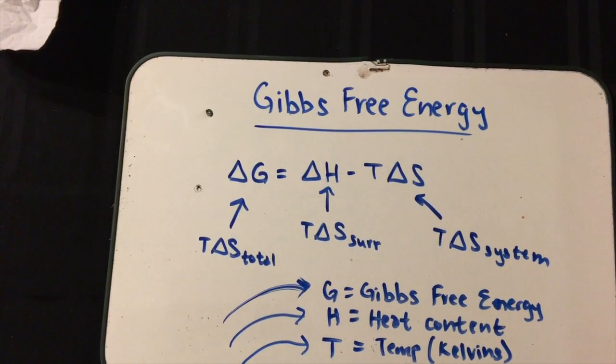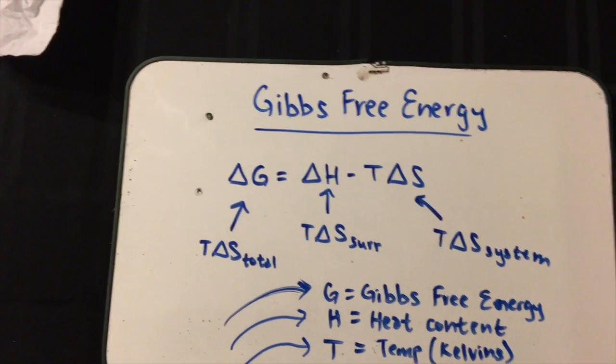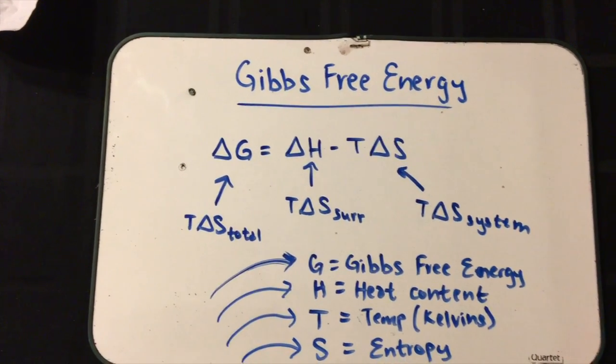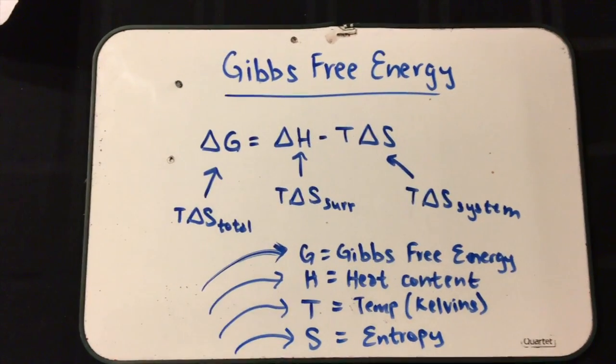G actually stands for Gibbs free energy, H is the heat content, T is the temperature in kelvins, and S is, as we discussed earlier, entropy.